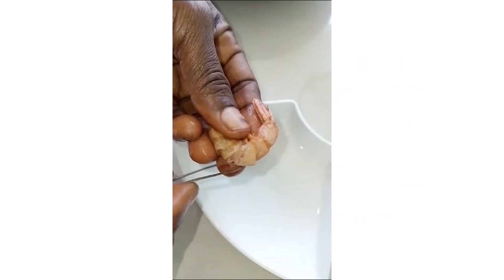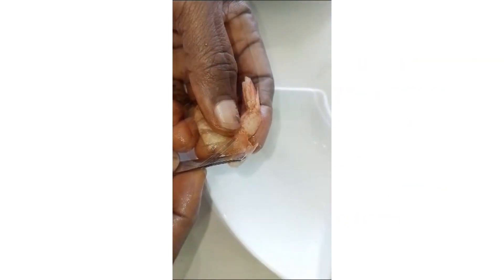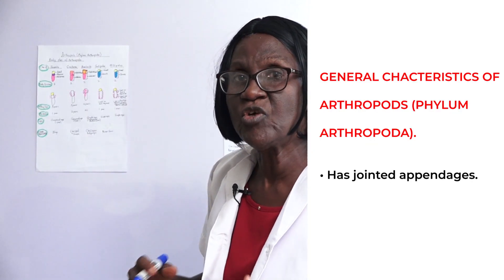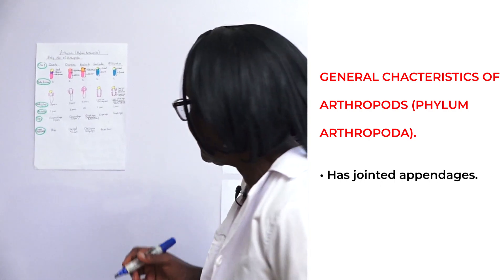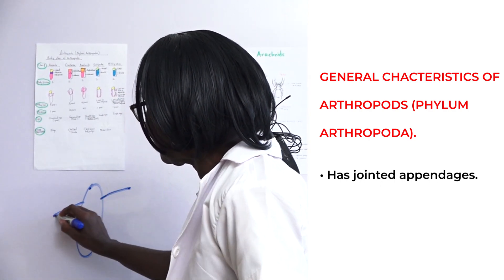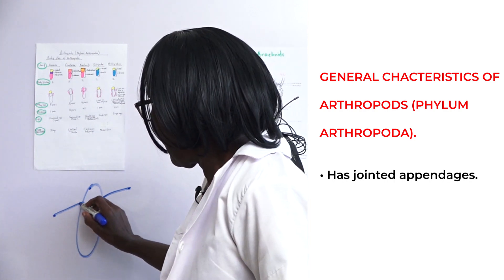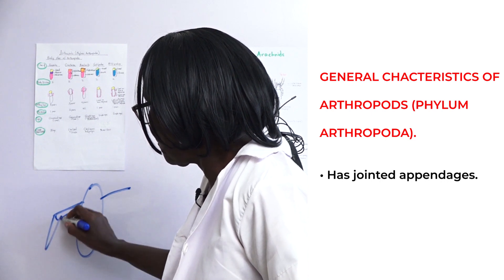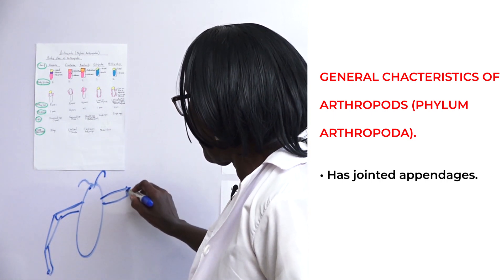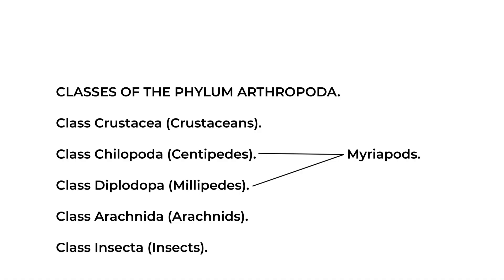The arthropods have an exoskeleton of chitin. They also have jointed appendages. An appendage is anything that sticks out of a body. Jointed appendages include walking legs, antennae, and so on.